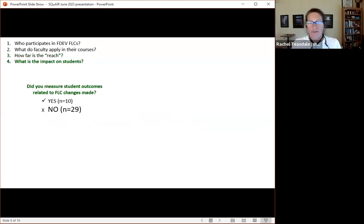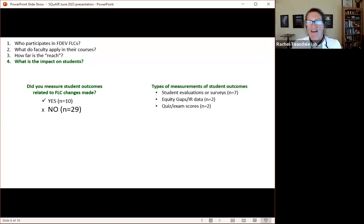Now, what was the impact on students? When we asked faculty if they measured student outcomes related to the FLC changes, only 10 people had and most people had not. So that's another lesson learned for us. The types of measurements that people reported include using student evaluations or surveys in their courses, looking at equity gaps or institutional research data portals that they can look at for their own courses, or looking at quiz and exam scores. Although these are the smaller number of faculty who are reporting having done this.